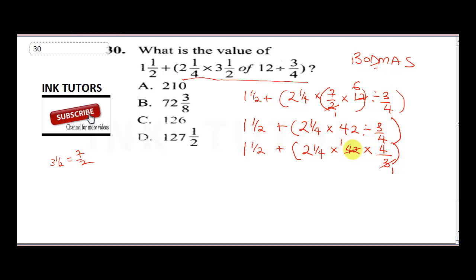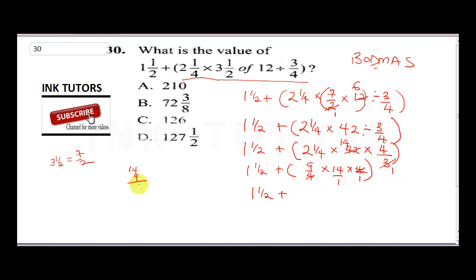Three into 42 gives 14. So we have one and a half plus, in the bracket, two and one quarter is nine over four, times 14, times four over one. The fours cancel, giving nine times 14. Nine times 4 is 36 carry 3, nine times 1 is 9 plus 3 equals 12, so nine times 14 equals 126.